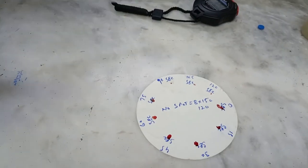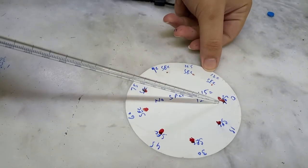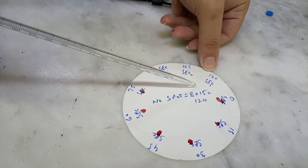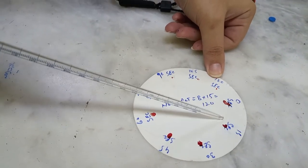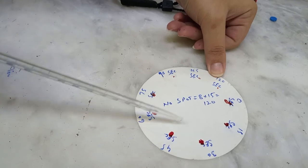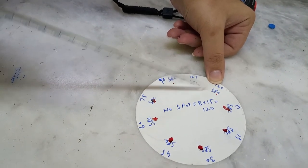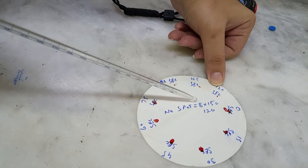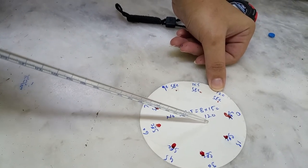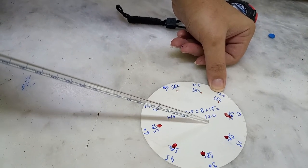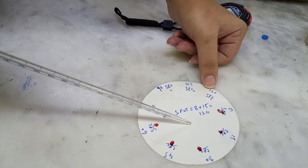For the results, we will calculate the number of spots and multiply by 15. In this case, the number of spots are 1, 2, 3, 4, 5, 6, 7, and 8. We multiply 8 by 15, which gives us 120 seconds. So the bleeding time is 2 minutes in this case, which is normal.